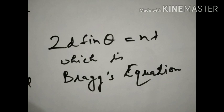The condition for constructive interference gives us: 2d sin θ = nλ. This equation is called Bragg's equation, as it was given by Bragg. This equation is very useful — all the methods we will study are based on it.